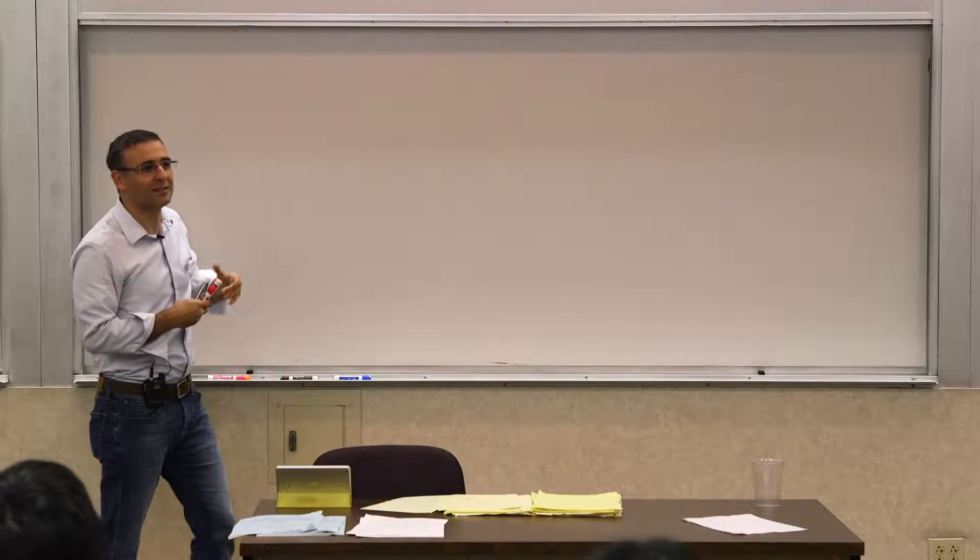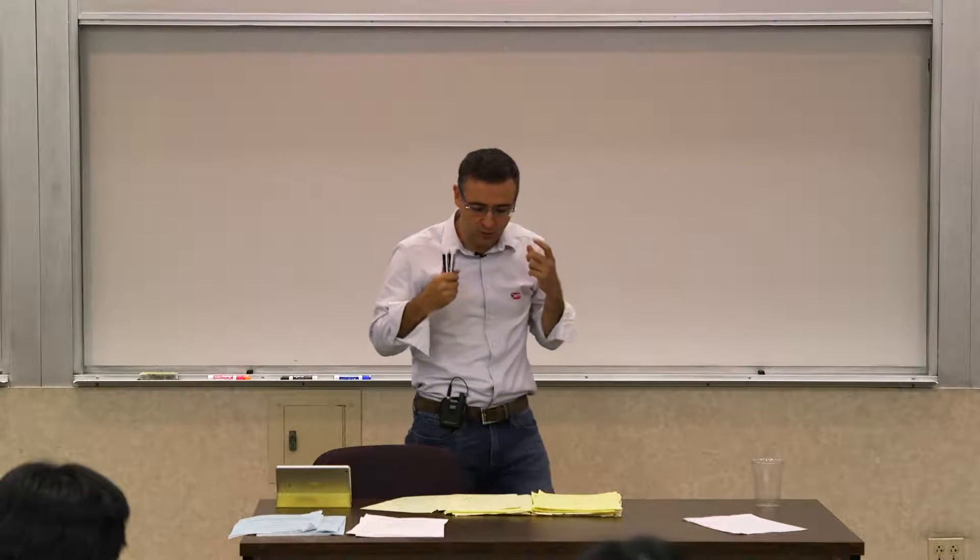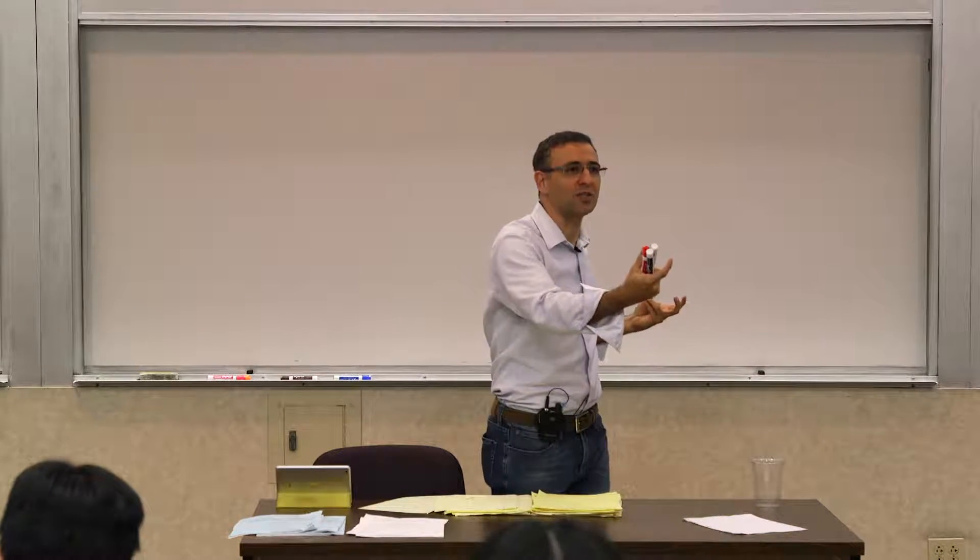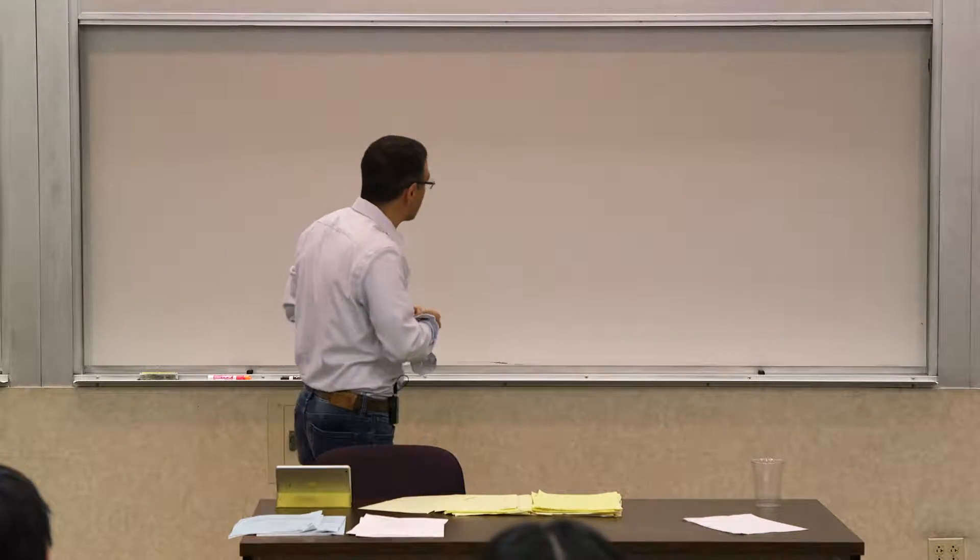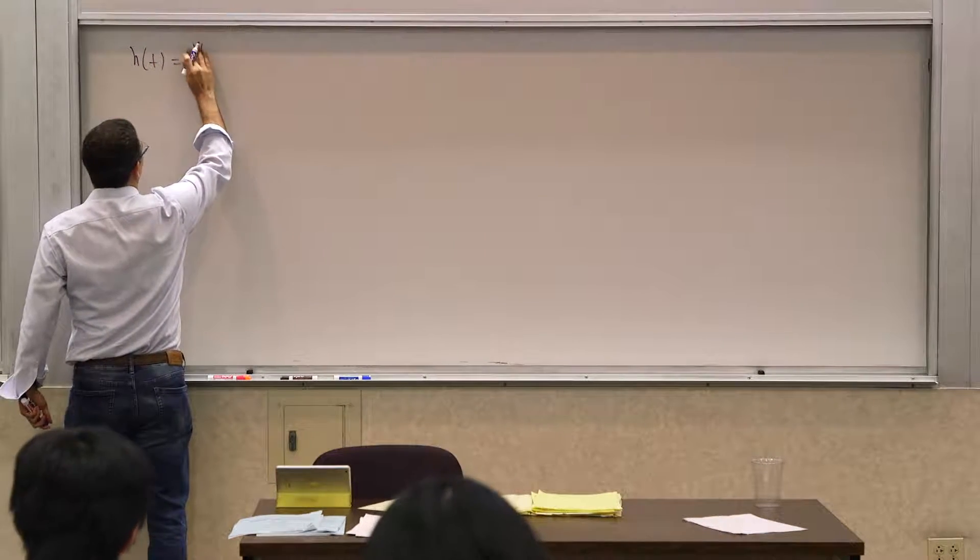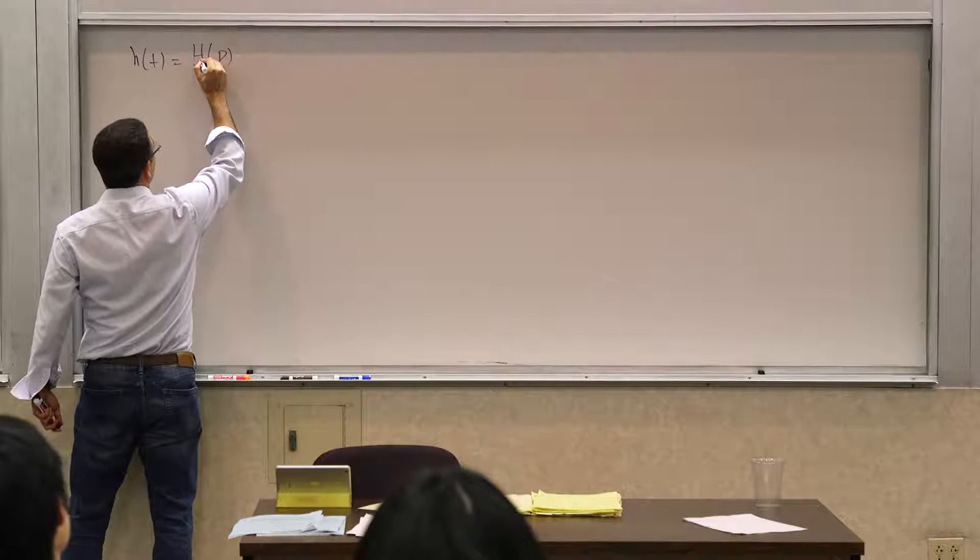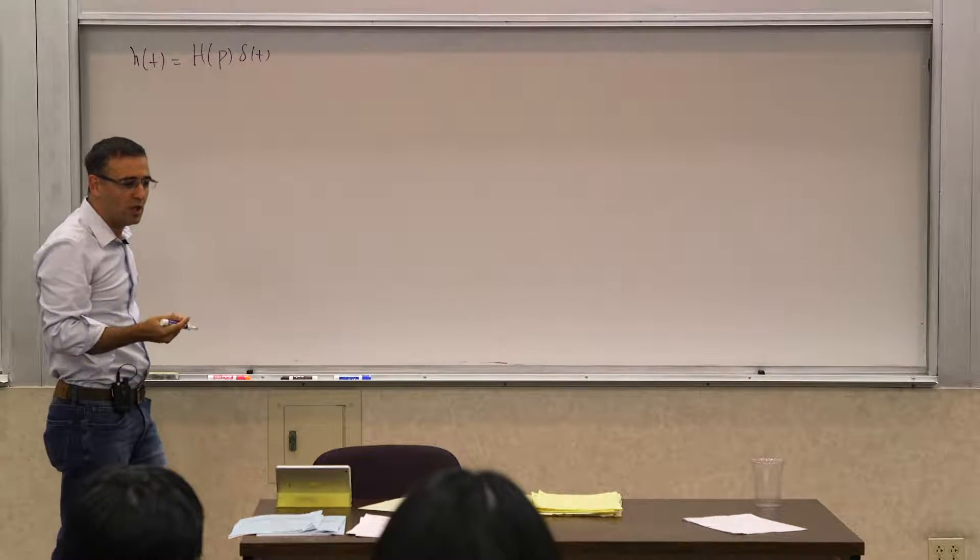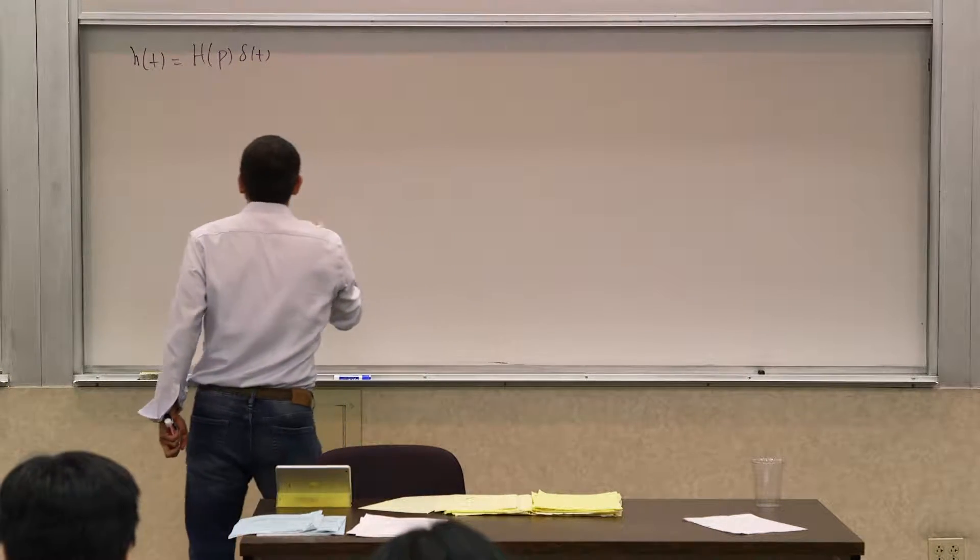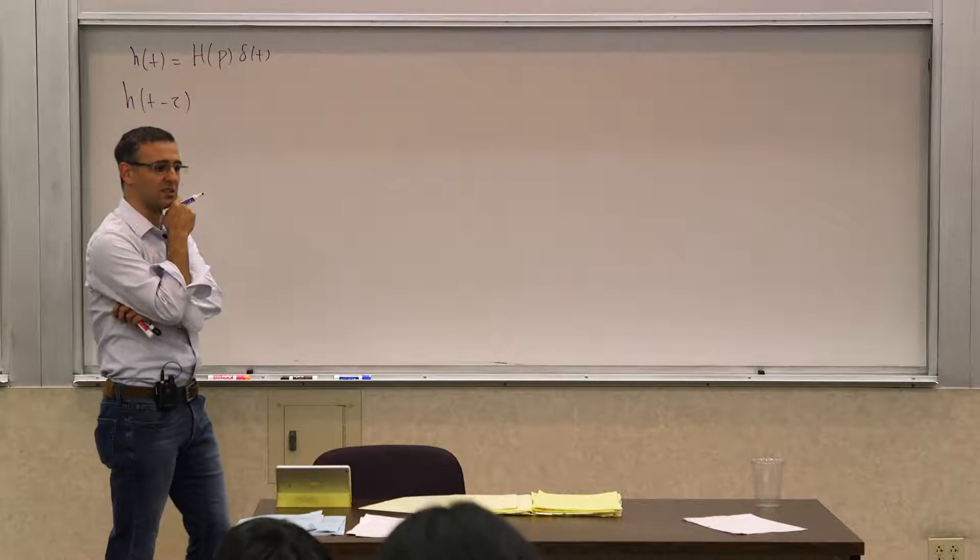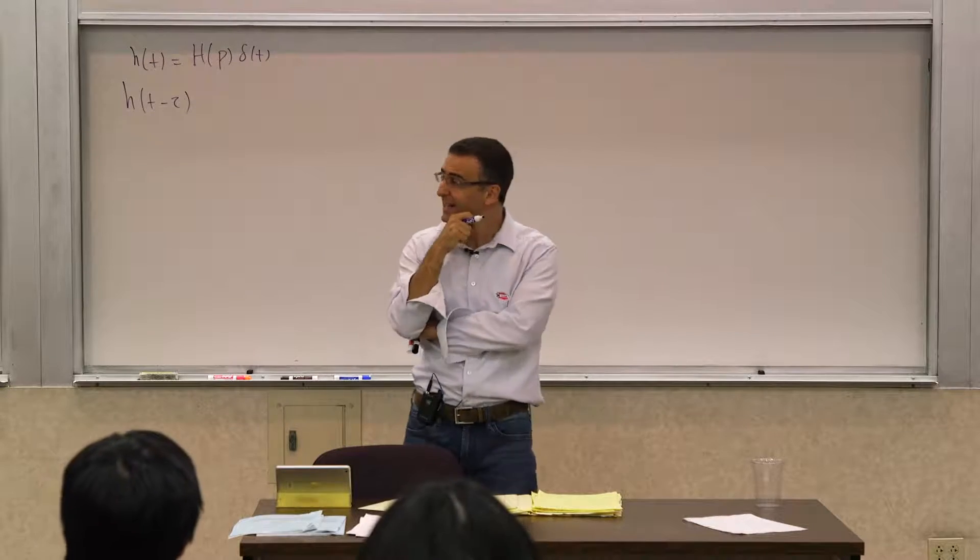So I use this to motivate this discussion of delay, because this is the last piece of the puzzle really. If you know how to deal with delays and time shifts essentially, then you can do anything with that. So the last piece of the puzzle is this. Let's say your h of t, the impulse response of the system, is the system operator operating on the delta by definition. So now the question is, what is the impulse response of h of t minus tau in terms of that? Well,